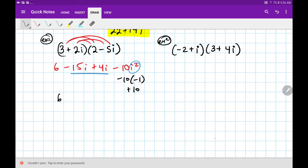And my next step should say six, and then minus fifteen plus four I is minus eleven I, plus ten. Combine like terms again. Six plus ten is sixteen, minus eleven I.